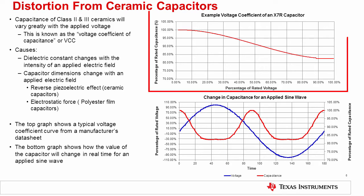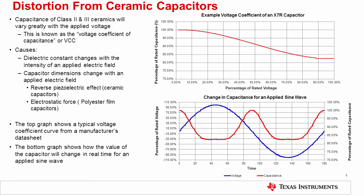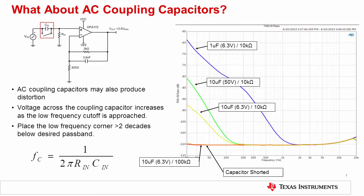The top plot was taken from an X7R manufacturer datasheet and shows how X7R capacitance changes as a percentage of the rated voltage. The graph on the bottom shows how the value of a capacitor will change in real time for an applied sine wave. Input AC coupling capacitors can also produce distortion.